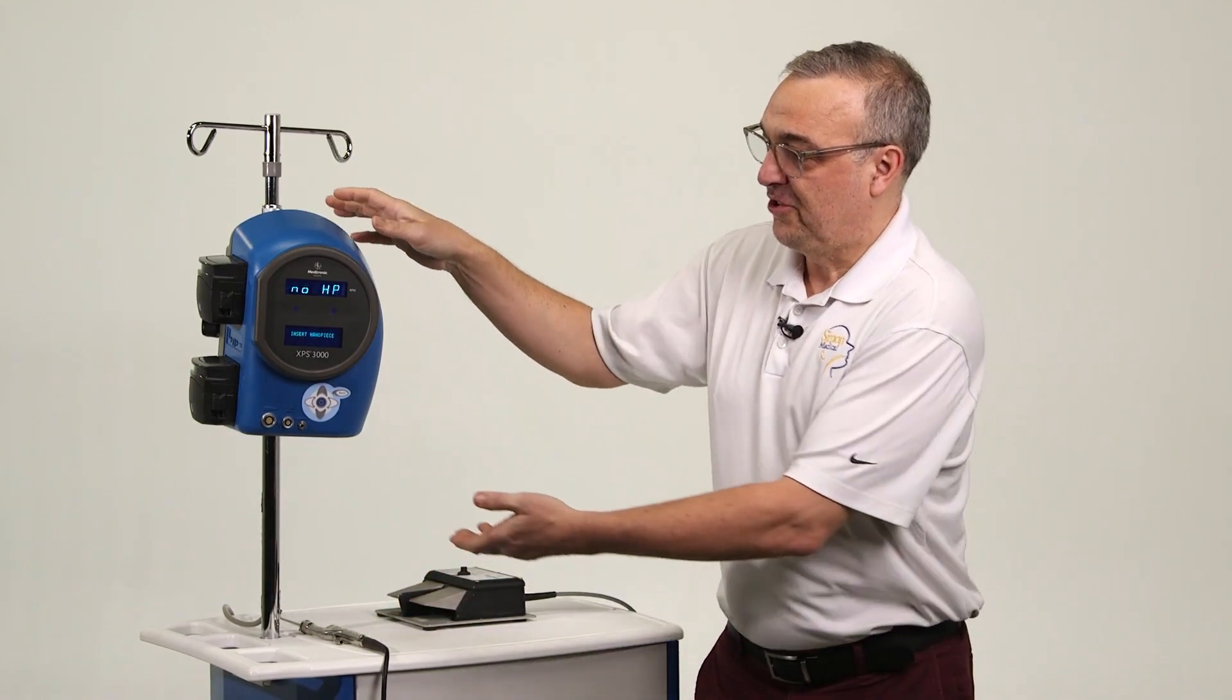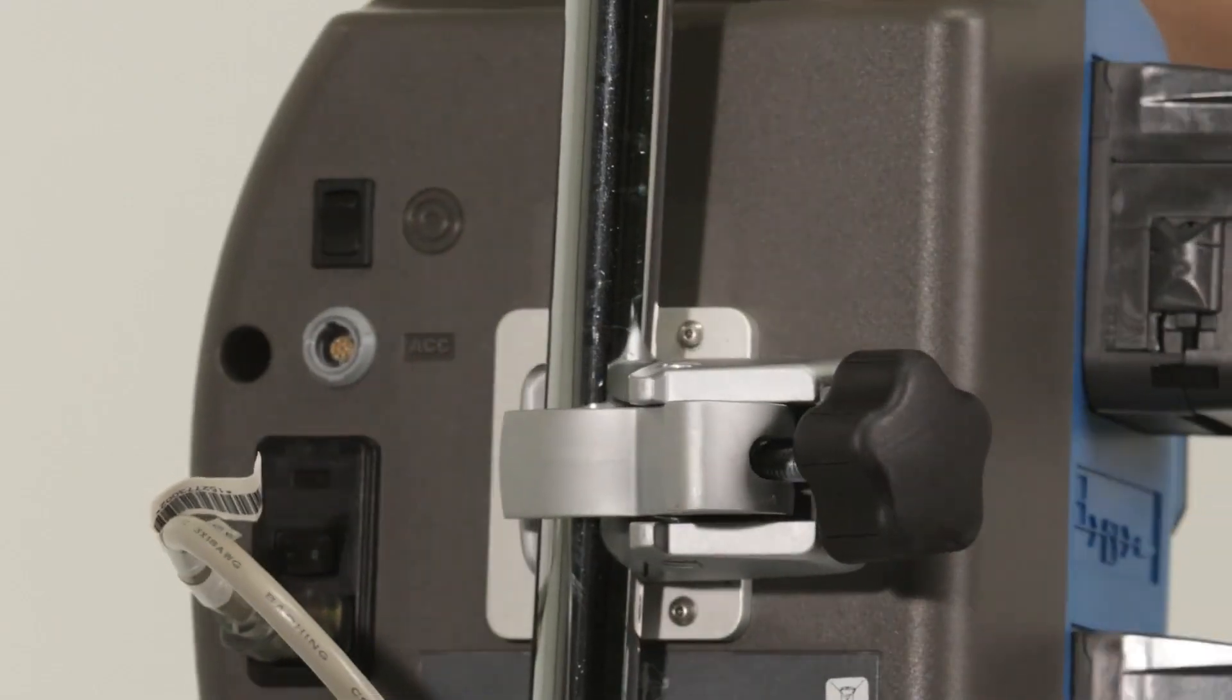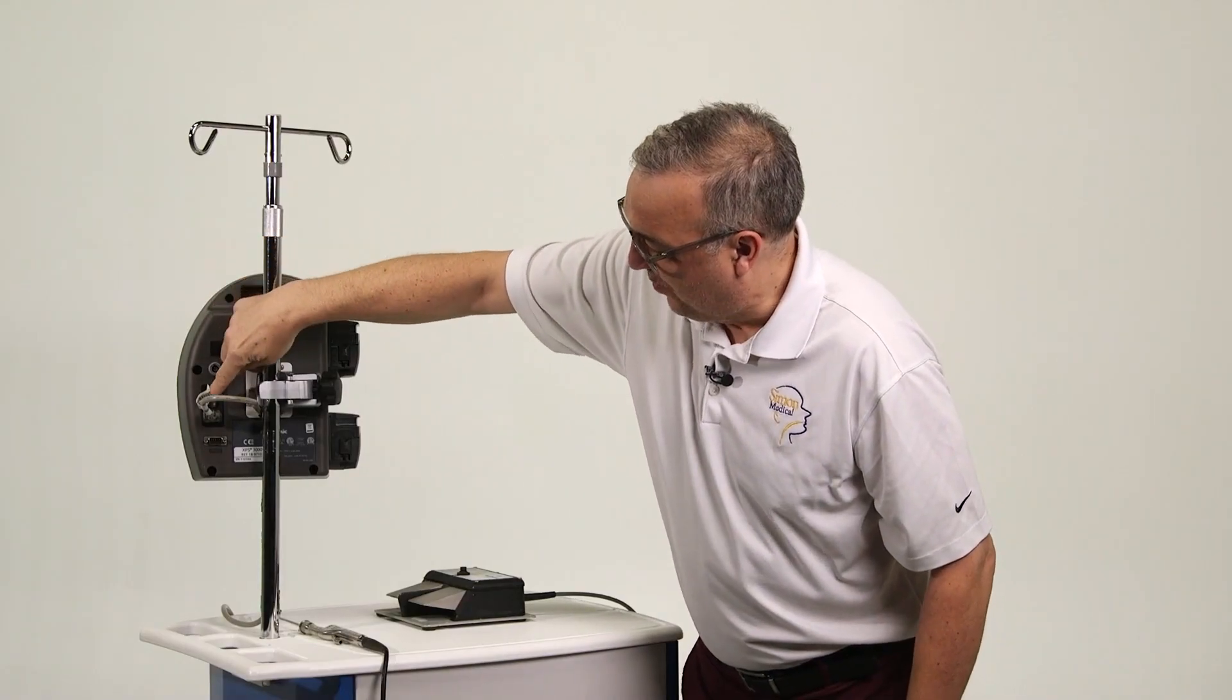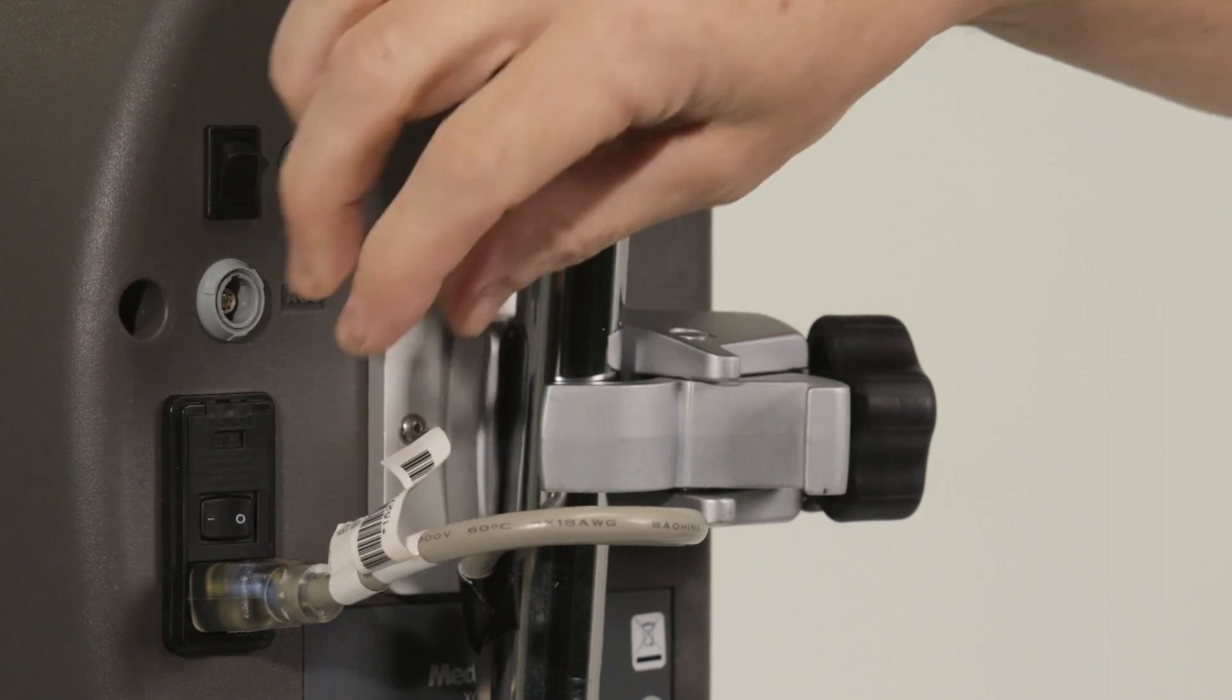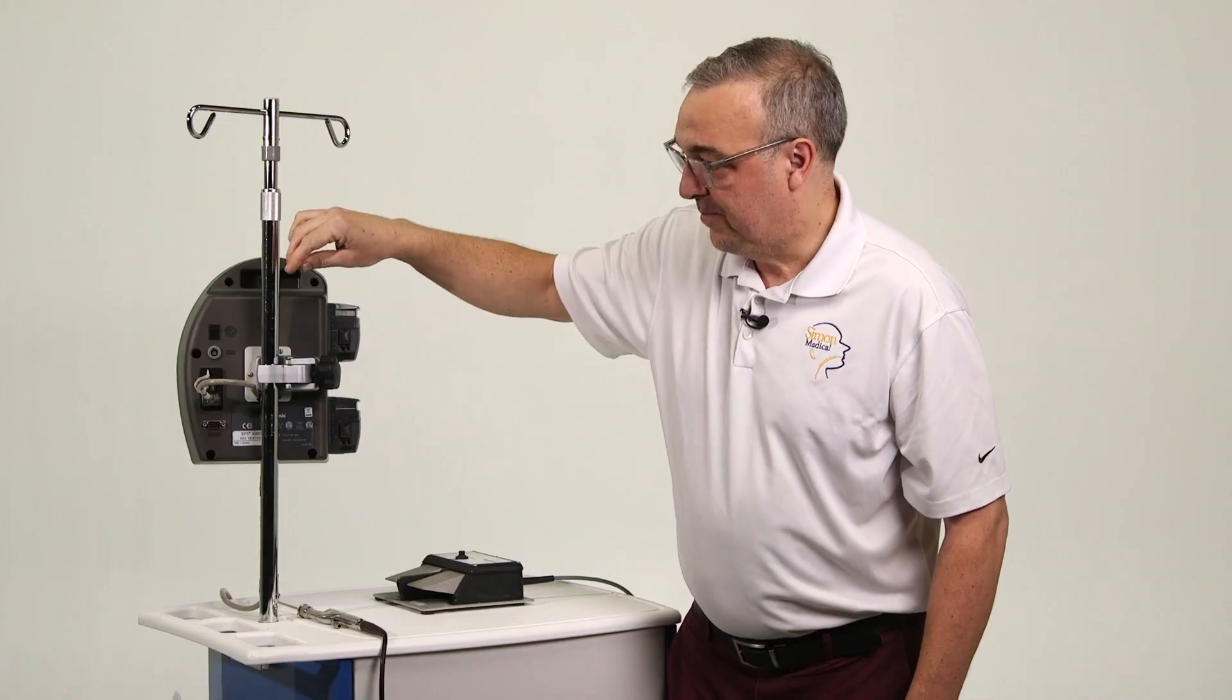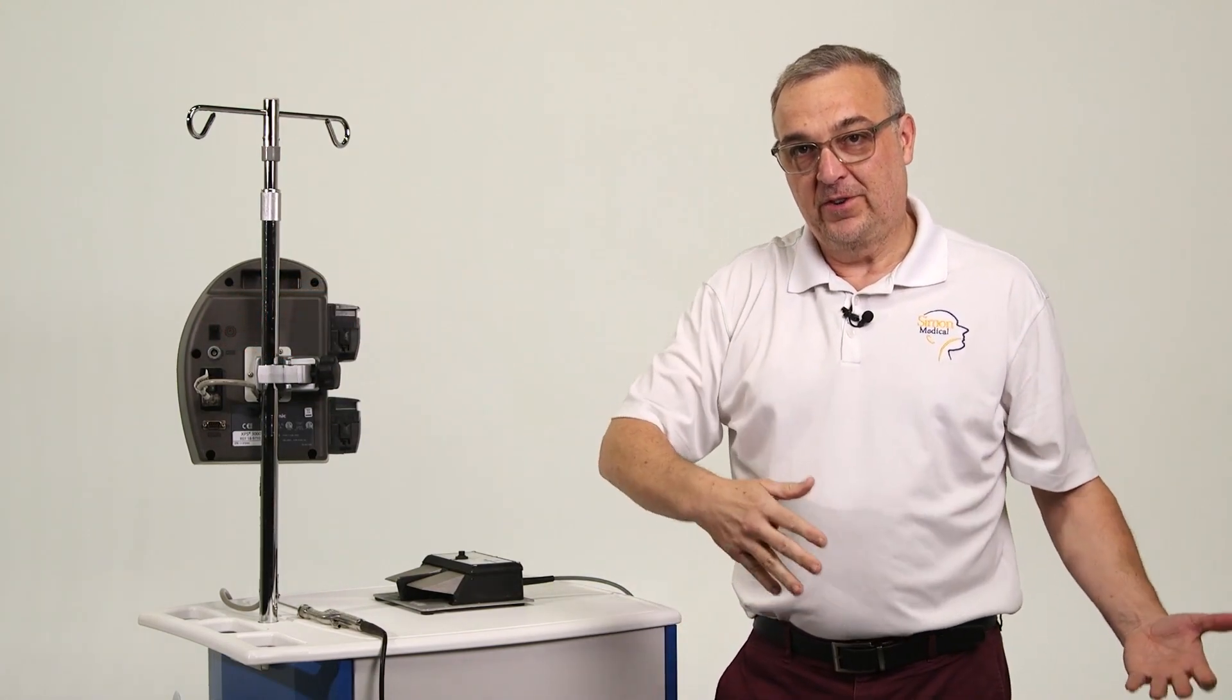So I'm going to briefly turn the unit just to show you the back. When the XPS is mounted on an IV pole, you'll see on the back we've got the power button on, we've got the cord, the power cord in. So you'll need to have that obviously with you when you're taking this from storage to the OR.